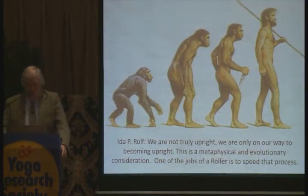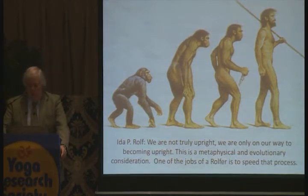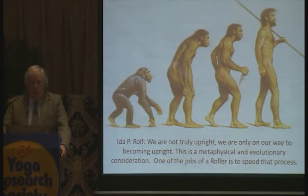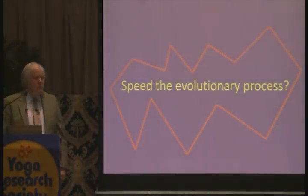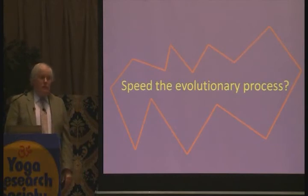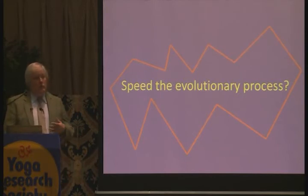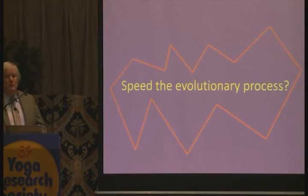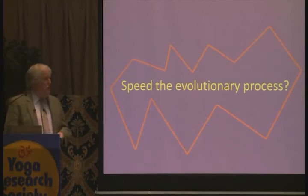Ida Rolf said: 'We're not truly upright — we are only on our way to becoming upright.' This is a metaphysical and evolutionary consideration. One of the jobs of a Rolfer is to speed that process — to speed the evolutionary process. Now there is a concept. This is where there are some interesting discussions about where we are in our evolution — are we evolving, where did we come from, where are we headed, where is the golden age, is it close before us?